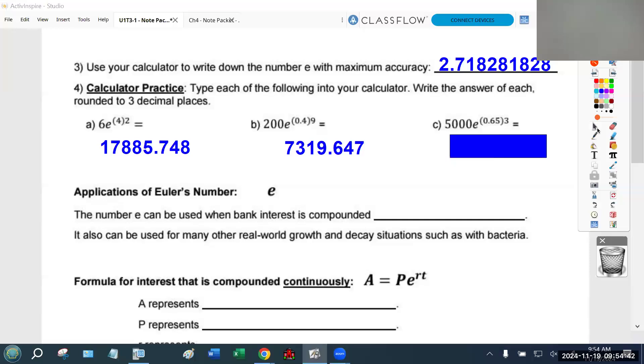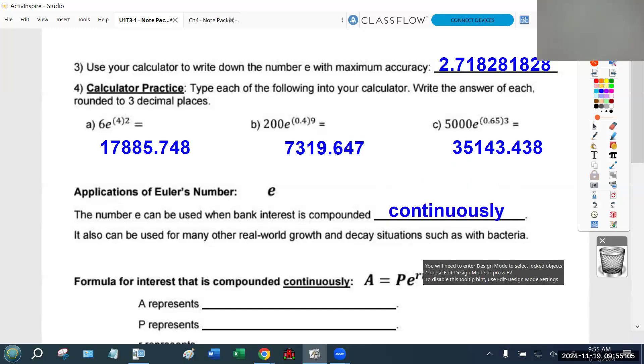Hopefully you got a little over 35,000 and if you rounded to the third decimal, you get 0.438. Questions on either of those? Now we're going to get into the actual final application of Euler's number. The number E can be used when bank interest is compounded continuously. It can also be used for many other real-world growth and decay situations, such as with bacteria.